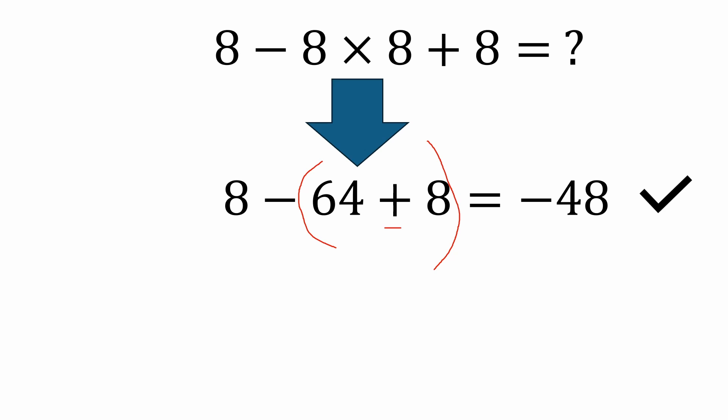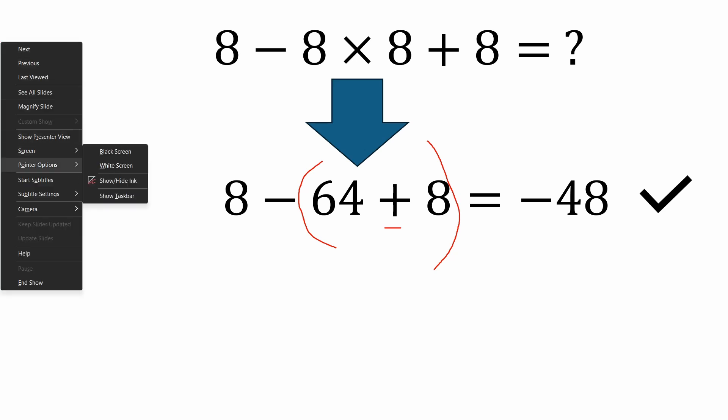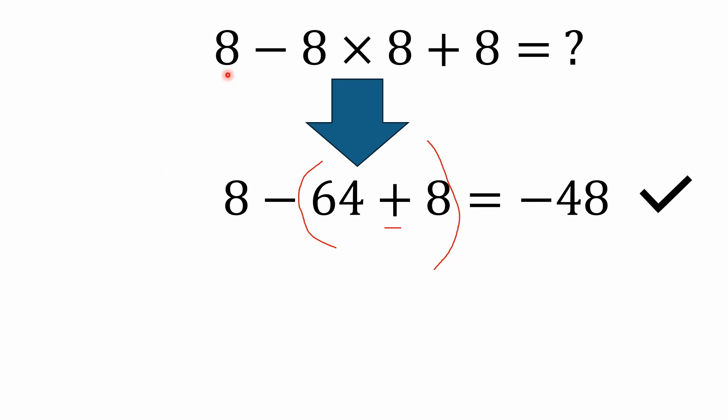So I want to keep that in mind. And it's not left to right. Some people will go, well, 8 minus 8 is 0. 0 times 8 is, let me put the pointer back here. A lot of people are going to say 8 minus 8 is 0. 0 times 8 is still 0 plus 8 is 8.